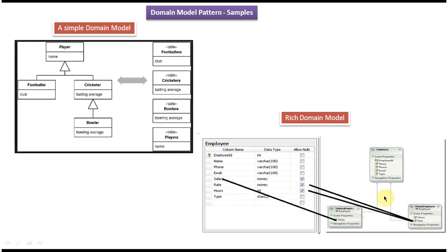Salary Employee extends Employee, so whatever Employee attributes are there will be available in Salary Employee. Like that, Hourly Employee extends Employee class, so whatever attributes are there in Employee class will be available in Hourly Employee. So the mapping is a little bit complicated, which is why it is called rich domain model. Thanks for watching. Bye.